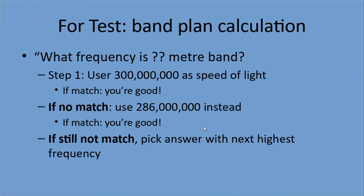For the test, let's get back to our band plan calculation. The test will ask what frequency or what band corresponds to a given wavelength. Use 300 million as the speed of light — if you get a match, you're good. If not, use 286 million instead. Still no match? Pick the answer with the next highest frequency from the one you calculated. Let's go through some quiz questions to show how this works.